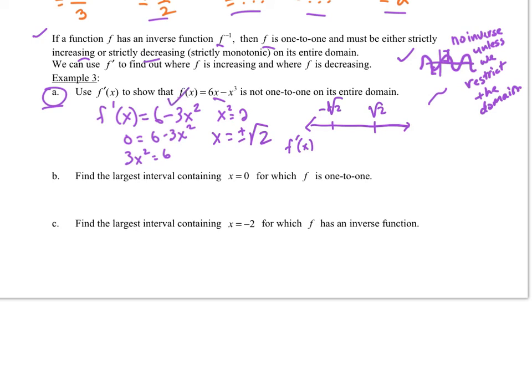So I can set up my number line here for f prime. And I'm going to have negative square root of 2 and positive square root of 2. And if I figure out what this looks like, this is just a parabola. It opens down. That tells me the sign here of f prime, so I'm going to be negative here, positive here, and negative here. So what that tells me is that it is not one-to-one because my derivative changes signs over the set of all real numbers.